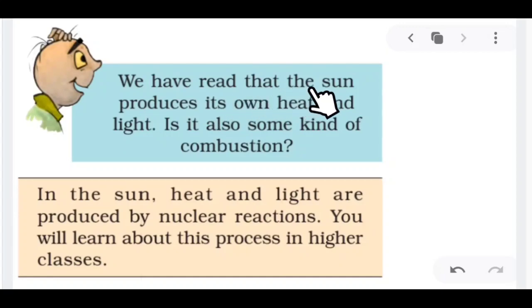Now come to what Boojo again is saying. Boojo is saying that we have read that the sun produces its own heat. The sun produces heat from millions of miles from here, but is it also some kind of combustion? What is your answer? Your answer is yes. Actually, it is not in a scientific manner, it is not a combustion, but some reactions are going on. And what a reaction? Let us see that. We will see that reaction.